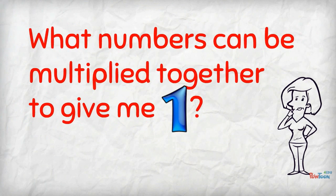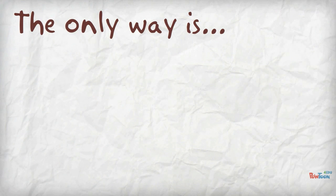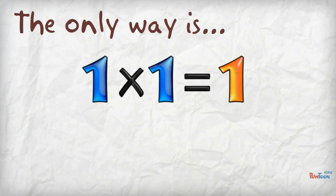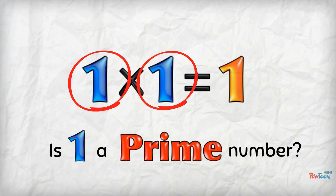Ask yourself: What numbers can be multiplied together to give me 1? The only way of multiplying to get the answer 1 is 1 times 1. Here are the factors. Does that make 1 a prime number?